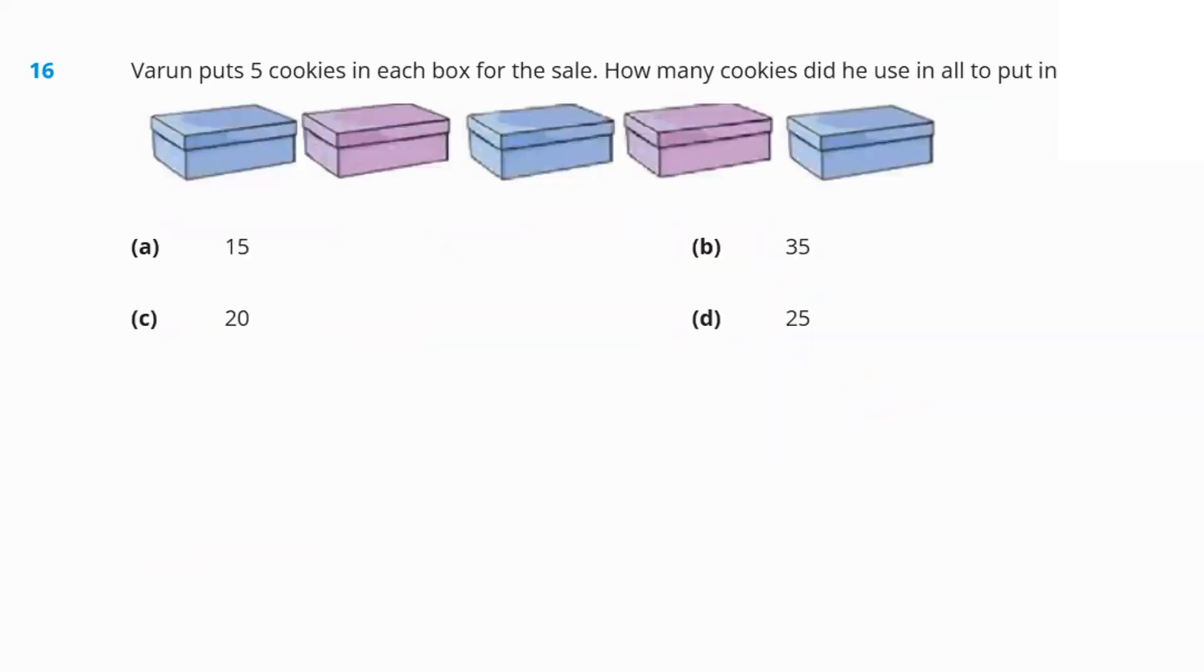Next question. Vinod put five cookies in the box for sale. In each of the box? How many cookies did he use to put in all the five boxes? If he's putting five cookies in each box, in five boxes, he'll put five five times. That's twenty-five. Option D is our answer.